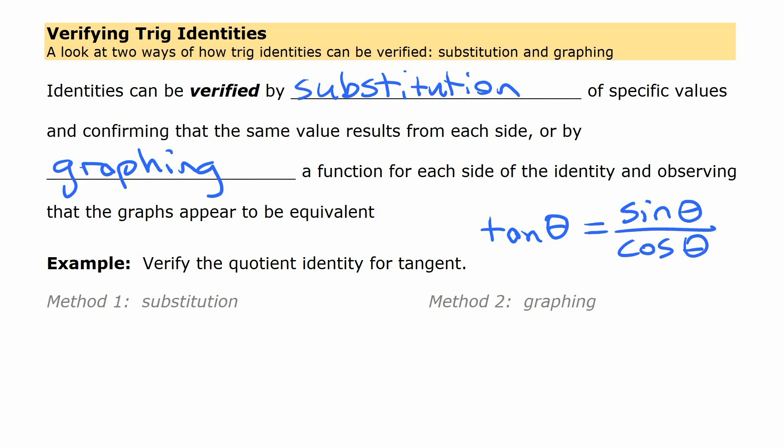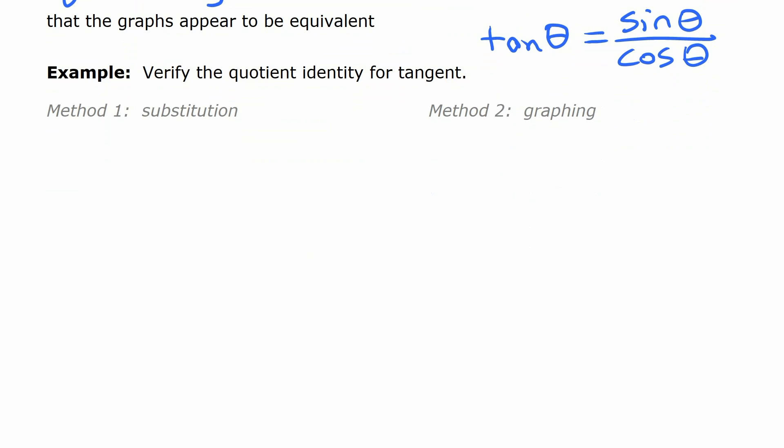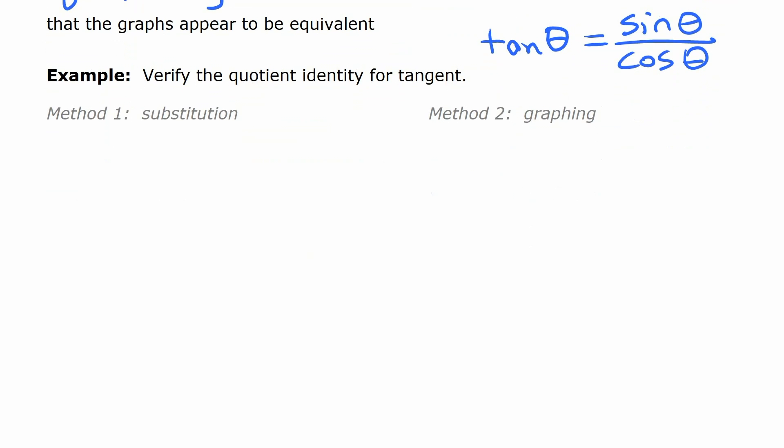So, by substitution, we can just pick a value and substitute it in, and see what we get. We can put several values in. Let's say we choose 1.9. And on the other side, sine of 1.9, cosine of 1.9. So, we can go to our calculator and evaluate that.